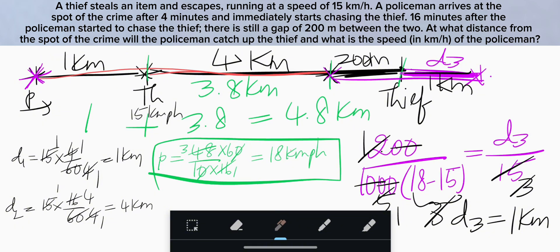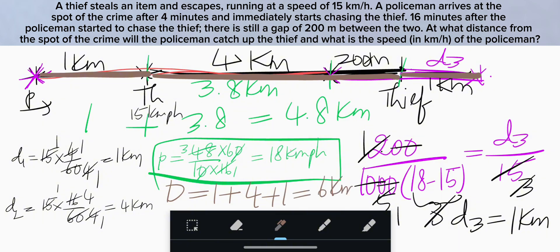So the distance from spot of the crime to catch-up point is 1 km plus 4 km plus 1 km. Total distance D is 1 plus 4 plus 1, which is 6 km. So speed of the police is 18 km per hour and the total distance from the spot of the crime to the catch-up point is 6 km. That's it guys.